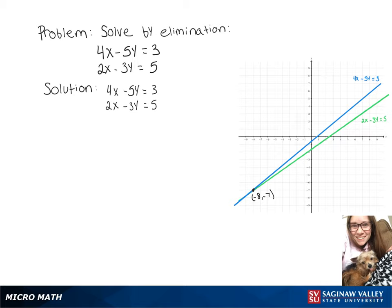We want to solve by elimination, so let's start by multiplying both sides of that second equation by 2. And then we're left with 4x minus 5y equals 3, and our second equation turns into 4x minus 6y equals 10.